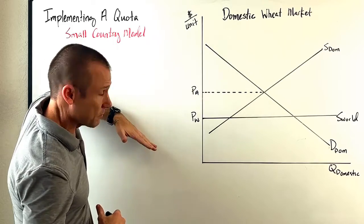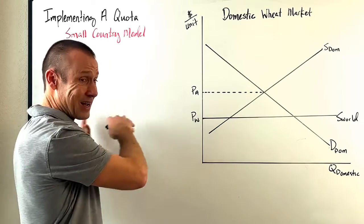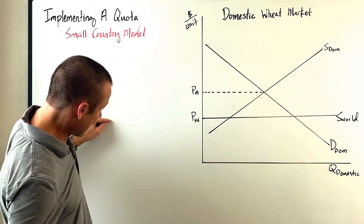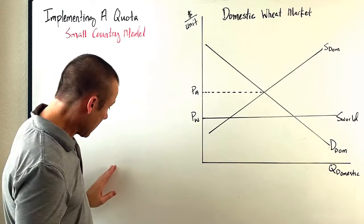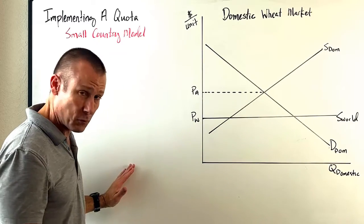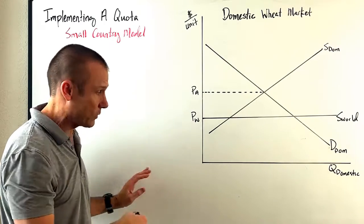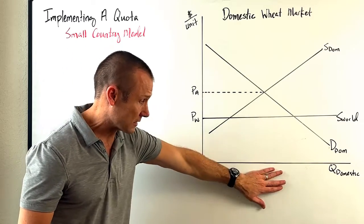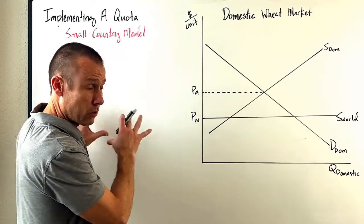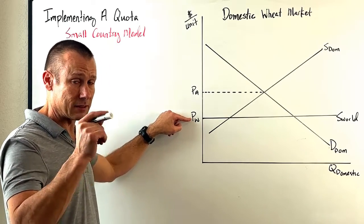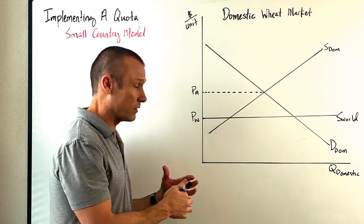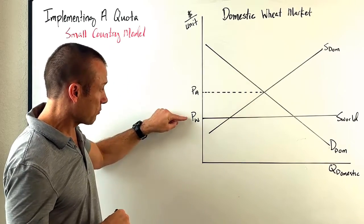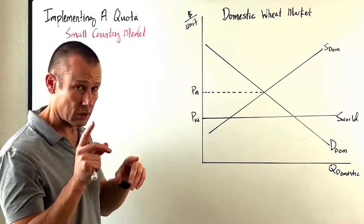So we have a supply world and demand world intersecting, and we can bring that price world right over to the horizontal axis. The scales are very different though — over there we might be talking about millions or billions of bushels of wheat, while over here we're only talking about thousands or hundreds of thousands, because this is a single country. The world market is where price world is being set, and this country is a net importer.